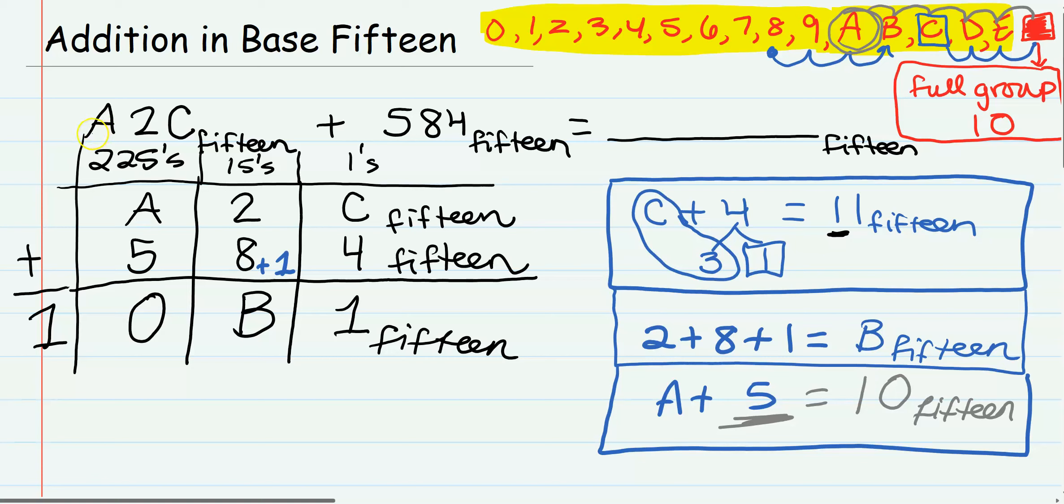We would say A2C in base 15 plus 584 in base 15 is going to equal 10B1 in base 15.